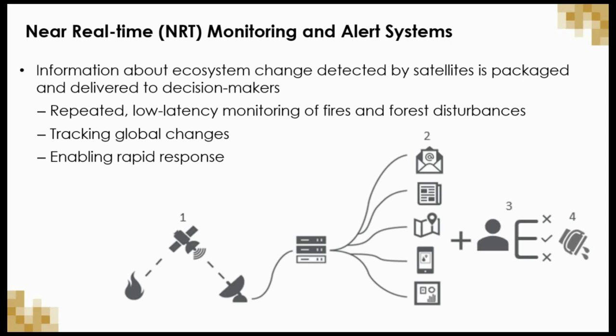This figure shows the components of a near real-time alert system. First, a threat is detected by a satellite. The satellite sends this information to a receiving station where the data is processed and disseminated through a variety of media to decision makers. The decision maker is a critical component of the system, as they can make an informed decision about whether to take action.